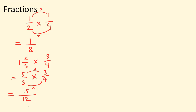Now this time we have an improper fraction because the numerator is bigger than the denominator. Let's change into a mixed number: 12 goes into 15 once, with 3 remainder, and we have 12 as a denominator — so one and three twelfths. Now three twelfths is not in its simplest form, so we can simplify: three divided by three is one, twelve divided by three is four. So the answer is one and a quarter. You can actually simplify before or after changing into a mixed number.